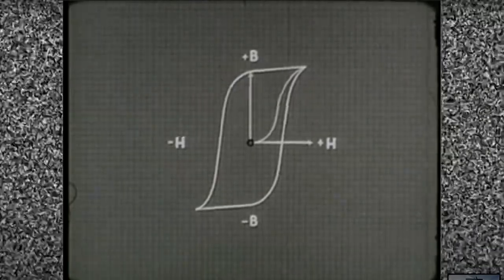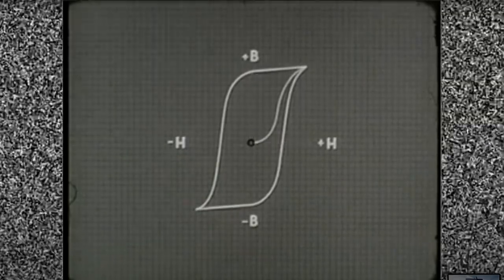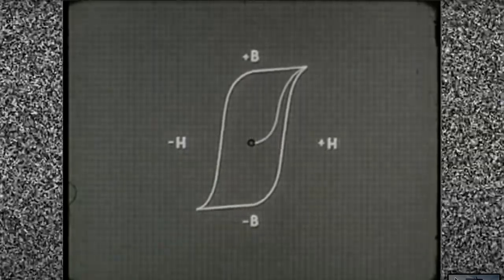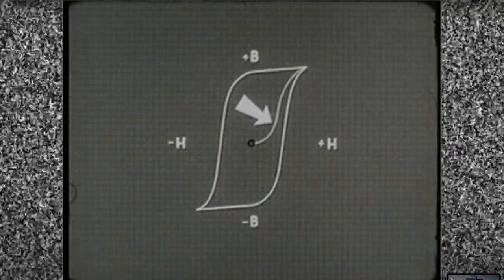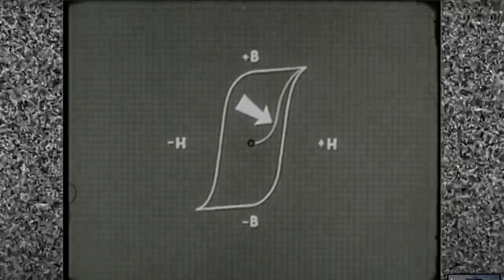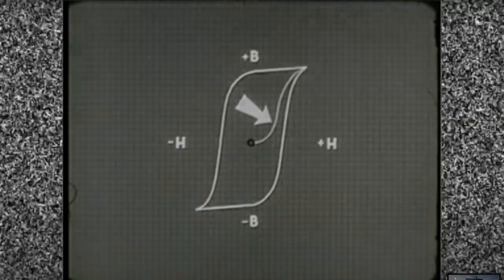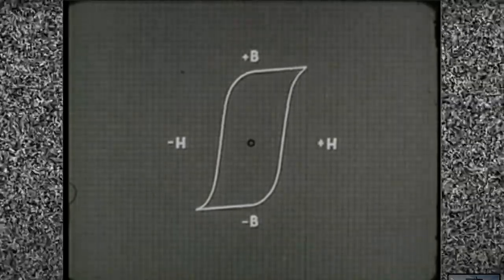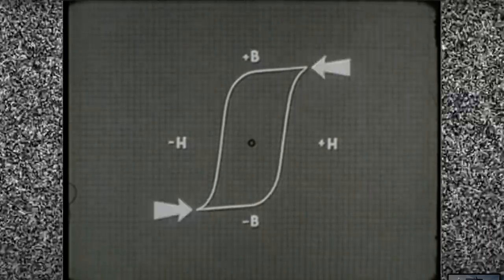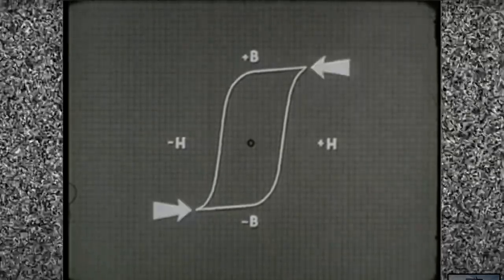We have now plotted the positive and negative magnetization of a core. The original S-shaped curve is produced only when we are first magnetizing the core from a completely unmagnetized state. From then on, we are concerned only with the rectangular loop.